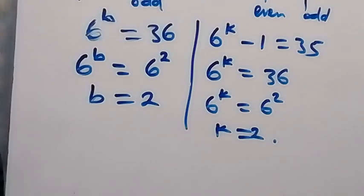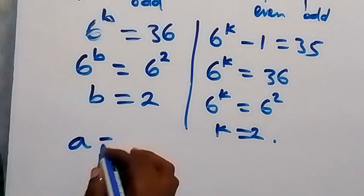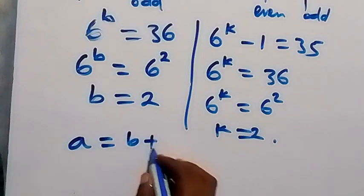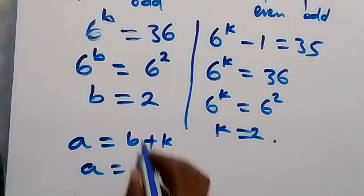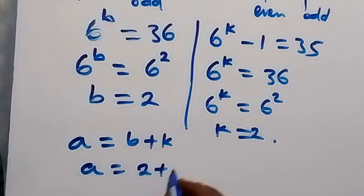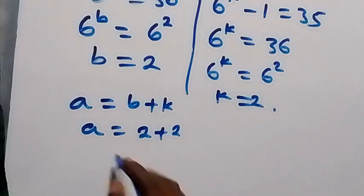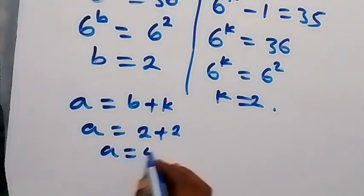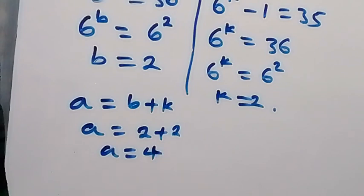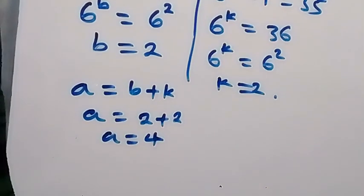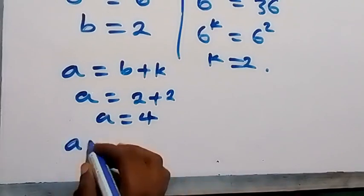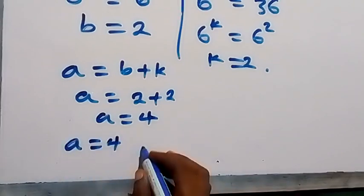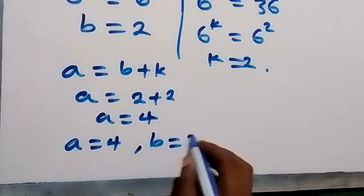Now we can find a. Since a equals b plus k, we get a equals 2 plus 2, so a equals 4. Therefore a equals 4 and b equals 2.